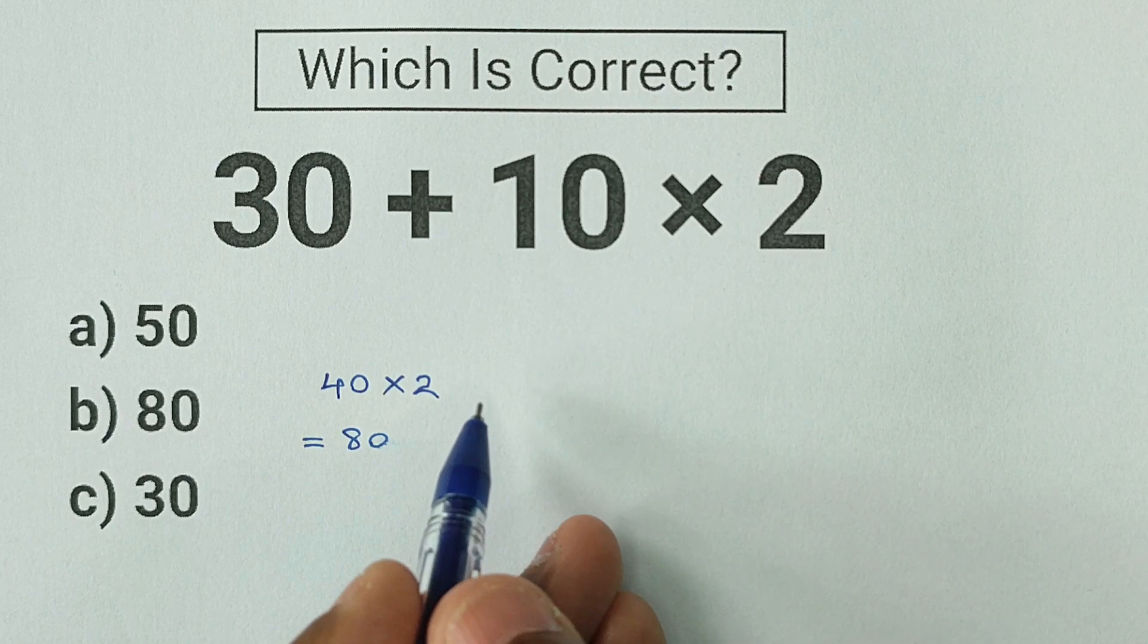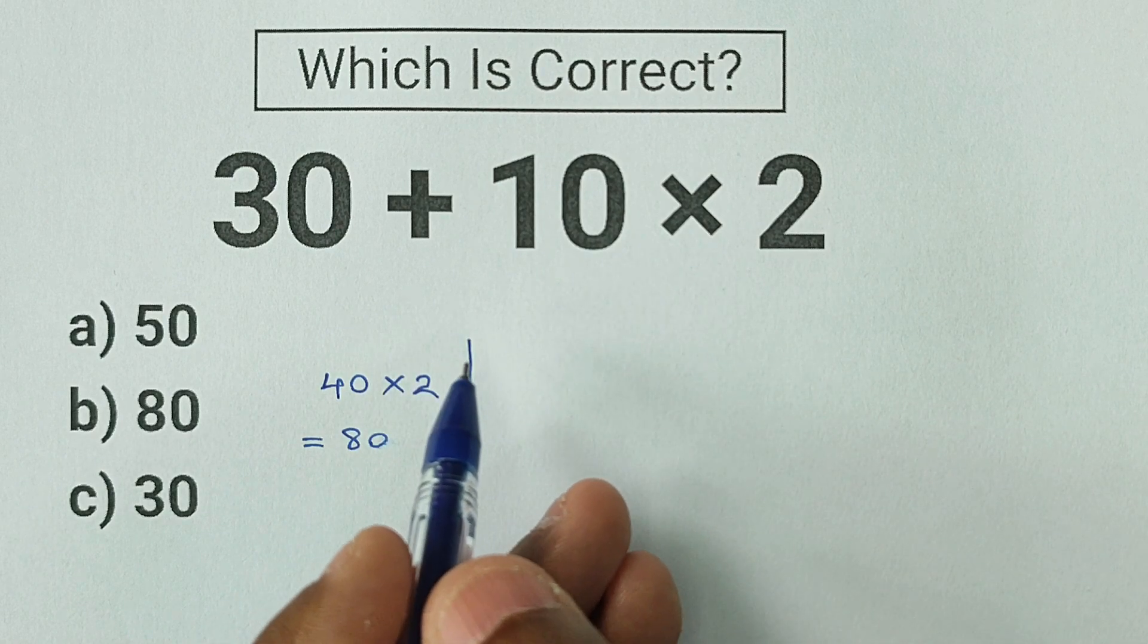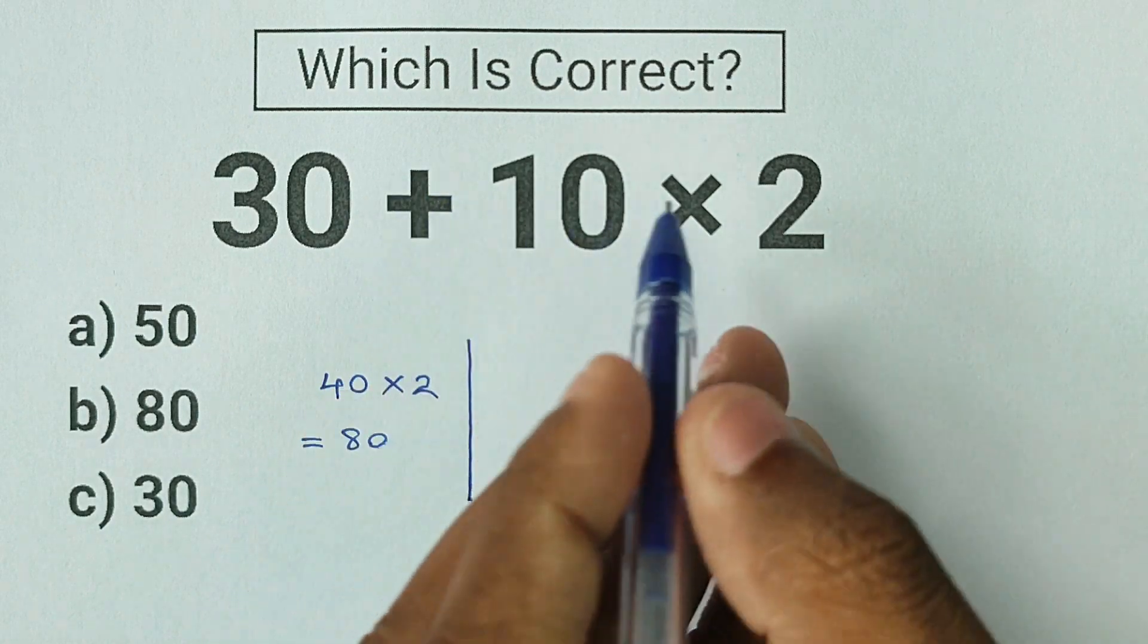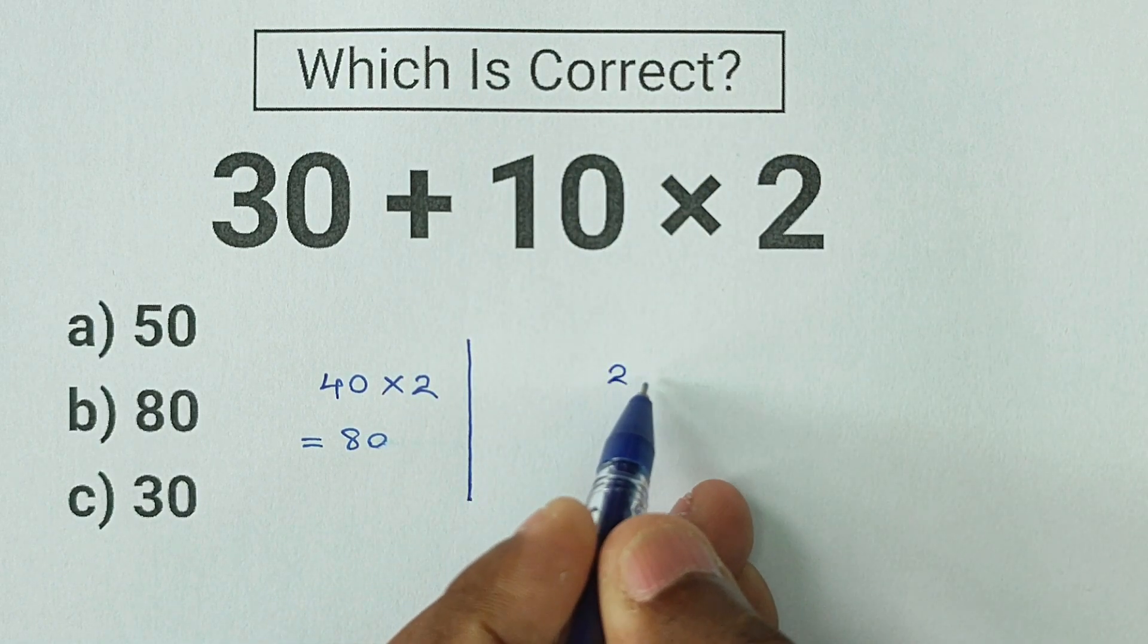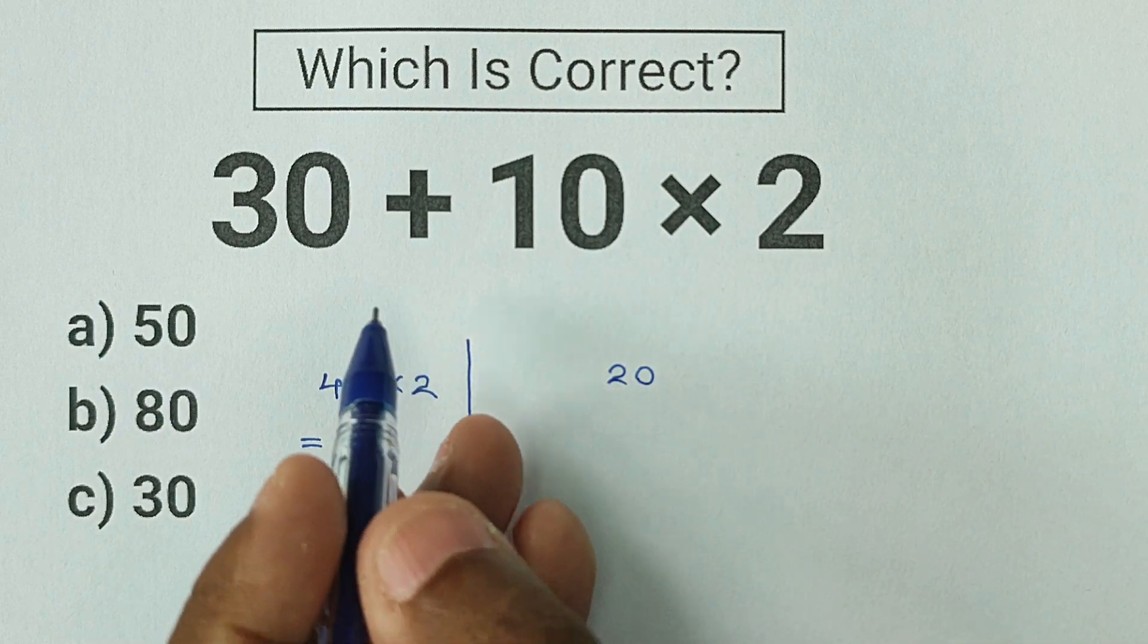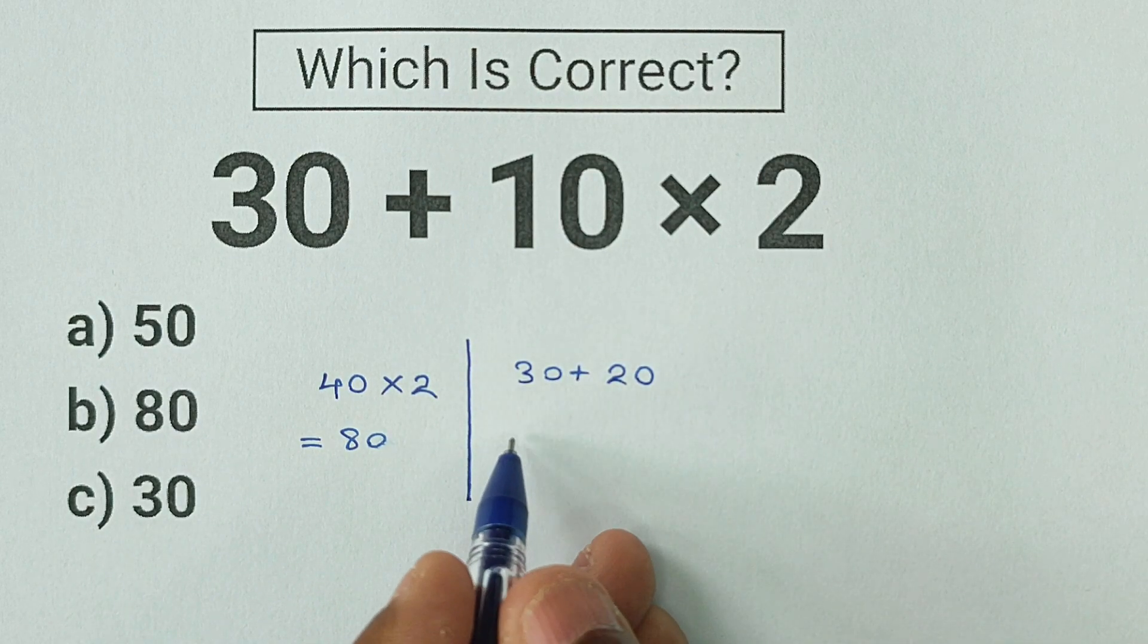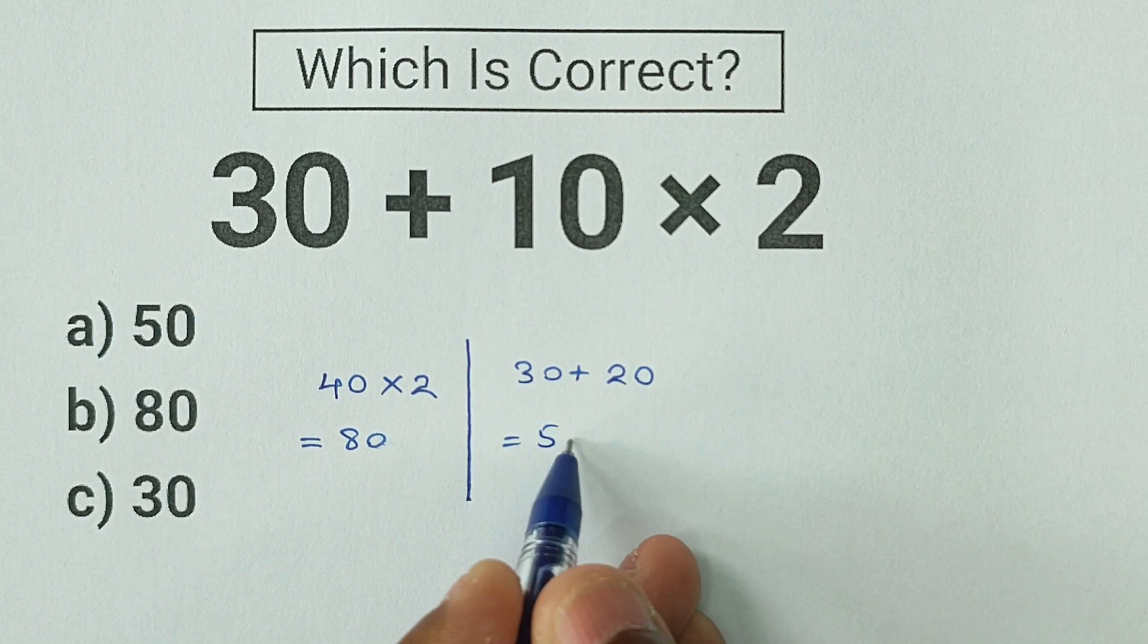Alright, the same exact problem we are going to do one more time. So we have 30 plus 10 multiplied by 2. Now instead of doing addition first, we are going to do the multiplication first. 10 multiplied by 2 is going to be the first step, and we all know 10 multiplied by 2 is equal to 20. We can't forget about the left side of this expression. This 20 is being added to 30, so now we have 30 plus 20, which is equal to 50.